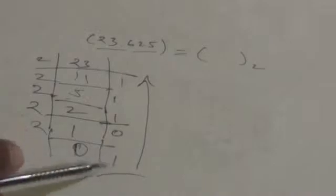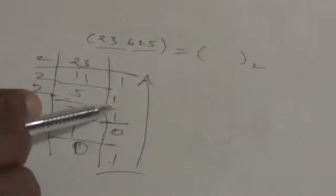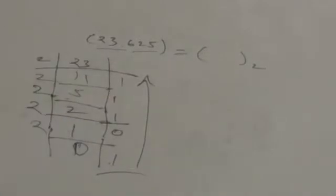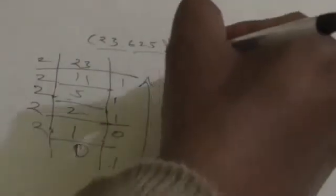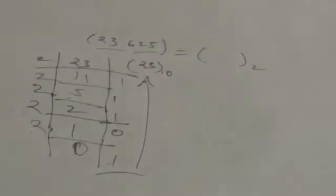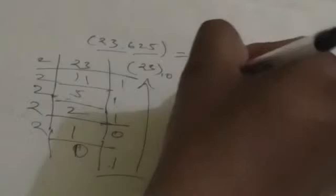Reading the remainders from bottom to top: 1, 0, 1, 1, 1. So when I convert 23 into binary the result is 10111.